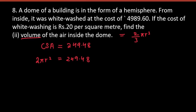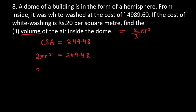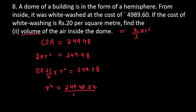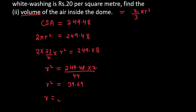So, 2 × (22/7) × R² = 249.48. Cross-multiplying: 7 goes up and 2 and 22 go down, giving 44 in the denominator. Dividing gives R² = 39.69. Taking the square root, R = √39.69 = 6.3 meters.